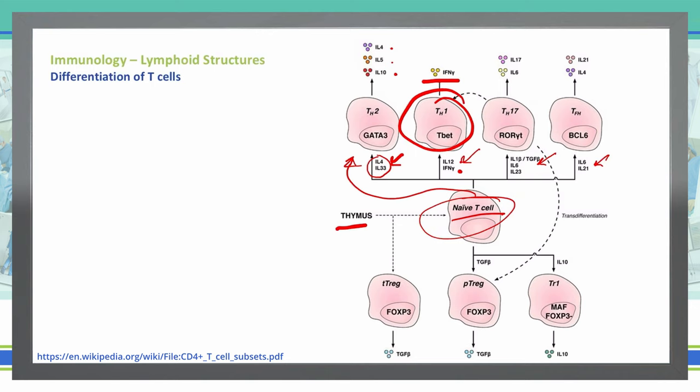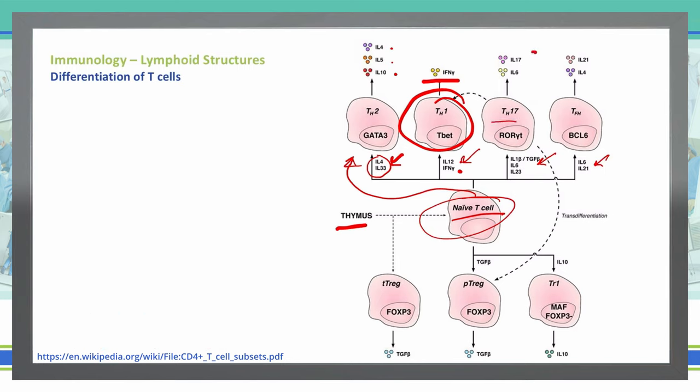Naive T cells that come in contact with interleukin-1 beta, TGF-beta, IL-6, and IL-23 can become a different type of T-helper cell — T-helper 17 — which gives off IL-17 and IL-6.